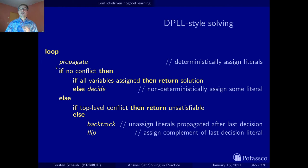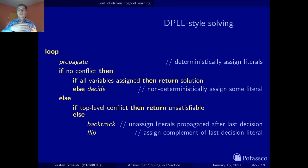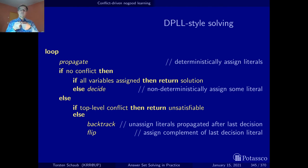Once we're done, we analyze the result of propagation. If there was no conflict and all variables have been assigned, we got a solution - we print it and make the user happy. If we have no conflict but there remain unassigned variables, we make a non-deterministic assignment: we have a bucket of unassigned variables, we choose one. This is called non-deterministic because we often use a heuristic to pick one, but we could equally pick another. So we decide - we pick an atom, assign a truth value, and continue looping.